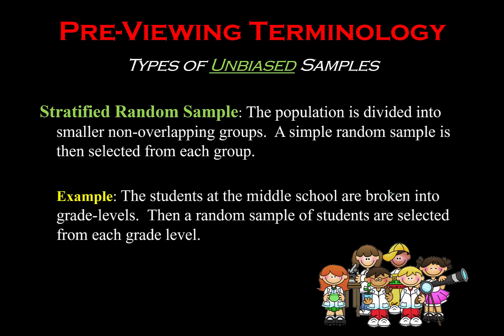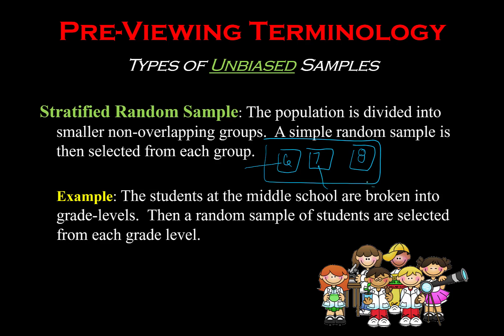A stratified random sample is when you have a population that you can divide into smaller subgroups, and then you randomly select from each of those groups. The middle school is a perfect example — you have your whole school, but within it you have 6th, 7th, and 8th grade. You randomly select a group of students from 6th, randomly select some from 7th, randomly select some from 8th, and those three groups merge together to make your sample group. However you select those students needs to be random and unbiased.